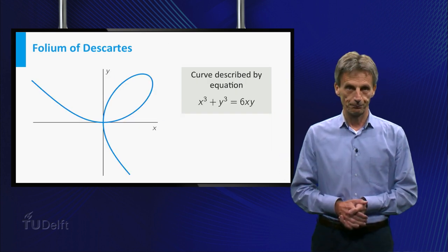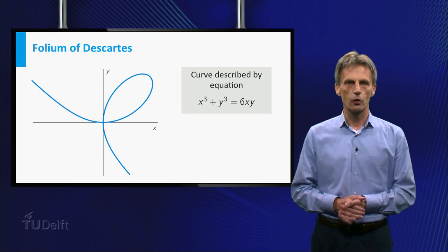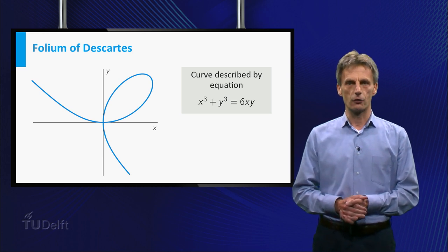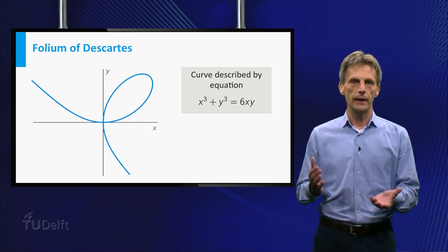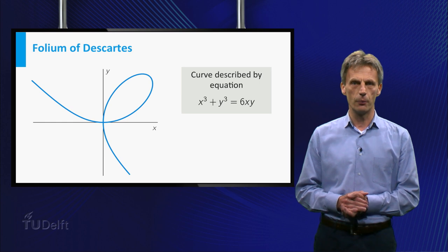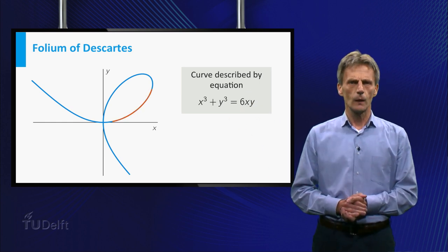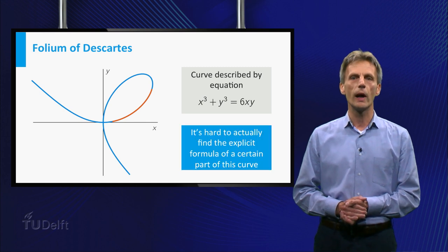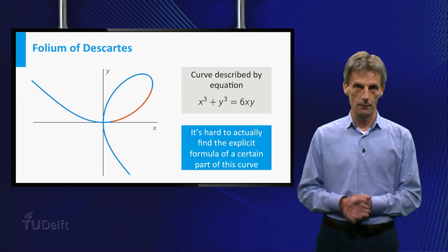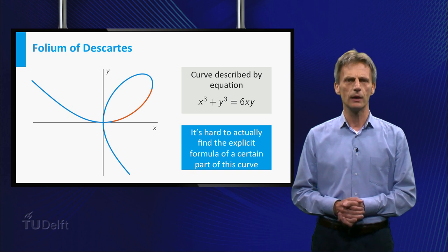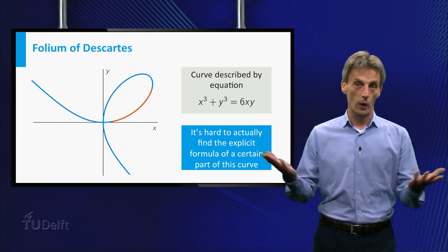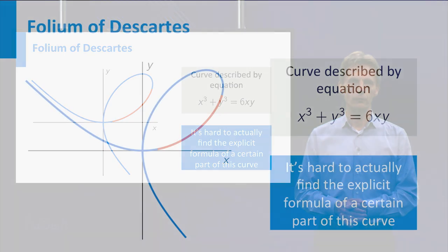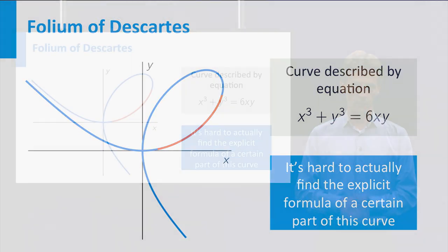Have a look at our second example. This equation describes a famous curve called the Folium of Descartes. As in the previous example, this curve is not the graph of a function — it implicitly defines several functions. Again, we could focus on a part of the curve, for example this red part here, which could be described by an explicit formula of the form y is equal to f. However, the computations to find an explicit formula for a part of this curve are far more difficult than in the case of a circle. So what do we do if we need to compute the slope of a tangent line? We use the technique of implicit differentiation.